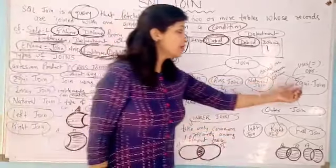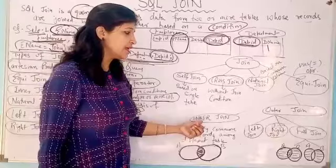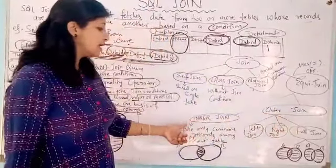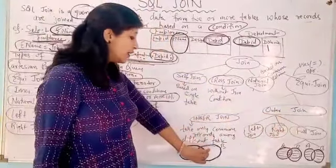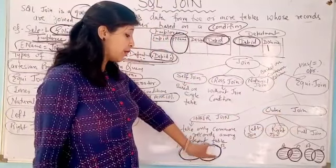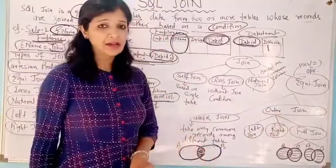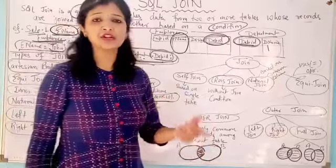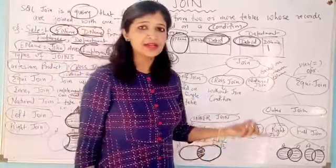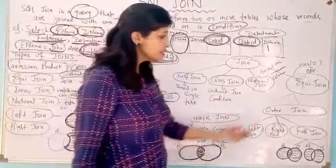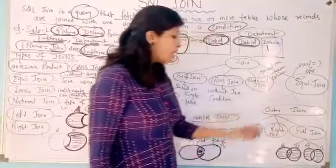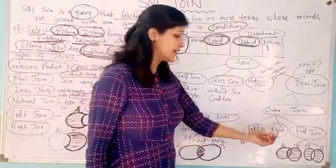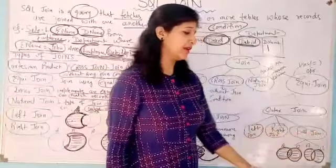Equi-join can be of two types: inner join and outer join. Inner join takes only common records from both tables. It is also similar to the intersection operation in set theory. The second type is the outer join, which can be of left outer join, right outer join, and full outer join.